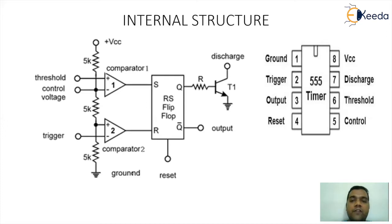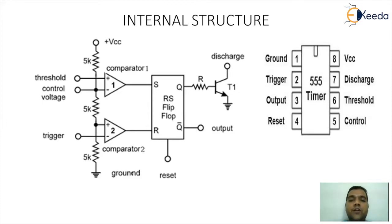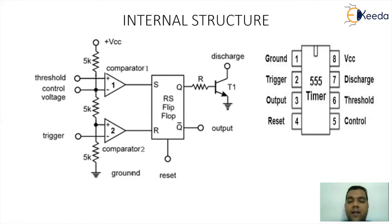The logic understanding happens with respect to the SR flip-flop. In the SR flip-flop, the S pin and the R pin control the status of Q and Q-bar. Whenever S becomes 1, Q becomes 1 and Q-bar becomes 0. Whenever R becomes 1, Q becomes 0 and Q-bar becomes 1. Q and Q-bar are complements of each other. If Q is 1, the transistor will turn ON and work like a closed switch. If Q is 0, the transistor will turn OFF and work like an open switch.